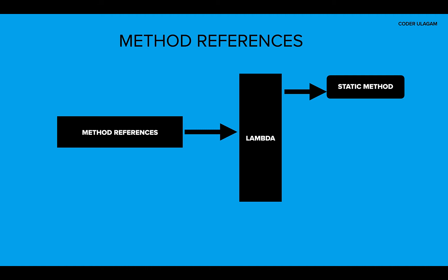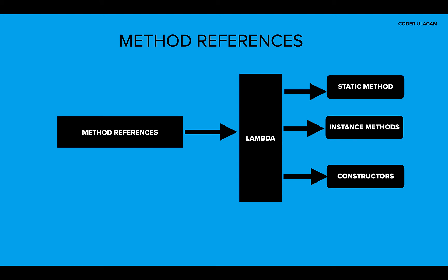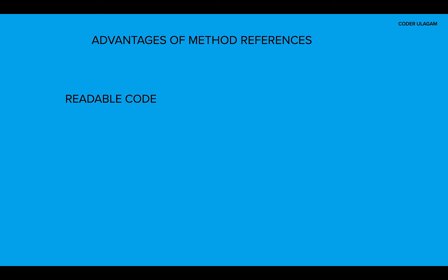There are three ways we can use method references: the first one is the static method call, the second one is the instance method call, and the last one is the constructor method call. I'll explain with some code examples on all these methods later in this video. The advantages of method references include more readable code, which means it's easy to maintain, and less boilerplate code.